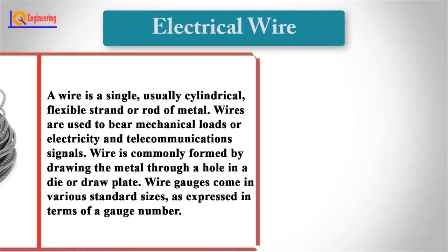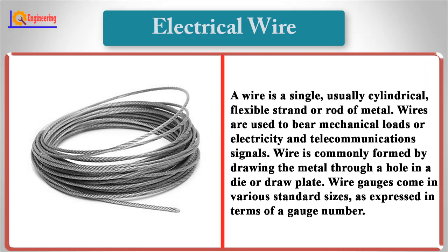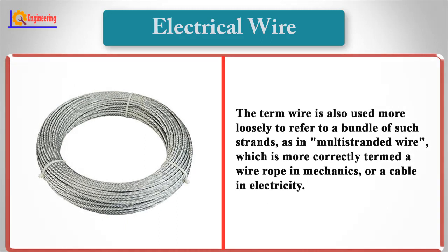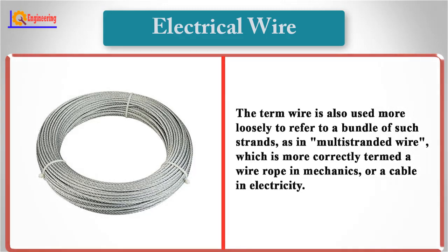Electrical Wire: A wire is a single, usually cylindrical, flexible strand or rod of metal. Wires are used to bear mechanical loads, electricity, and telecommunication signals. Wire is commonly formed by drawing the metal through a hole in a die or draw pallet. Wire gauges come in various standard sizes expressed in terms of a gauge number. The term wire is also used more loosely to refer to a bundle of such strands as a multi-stranded wire, which is more correctly termed a wire rope in mechanics or a cable in electricity.